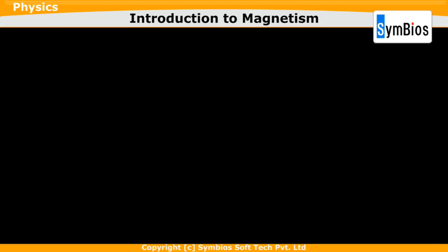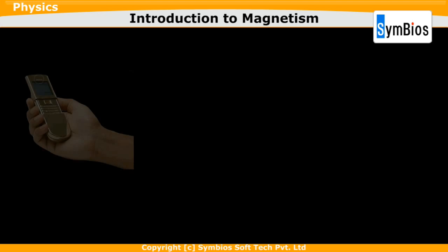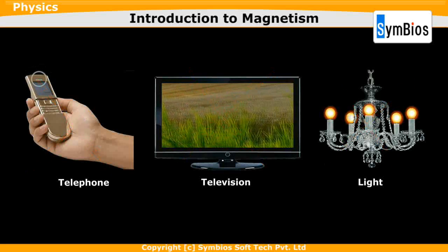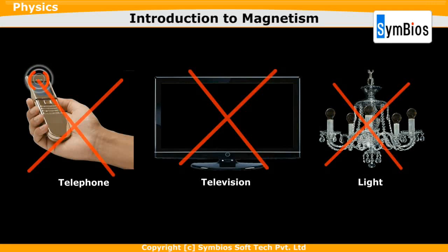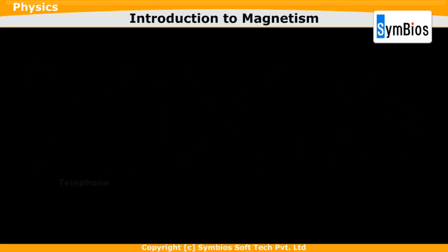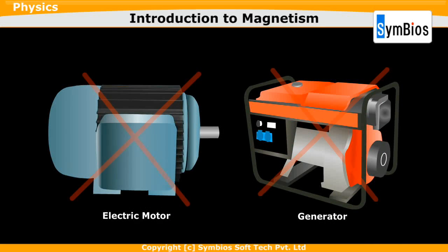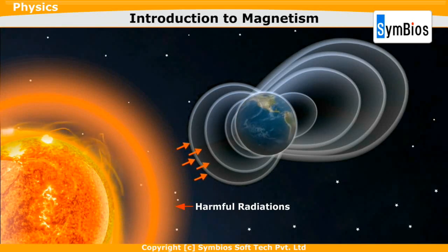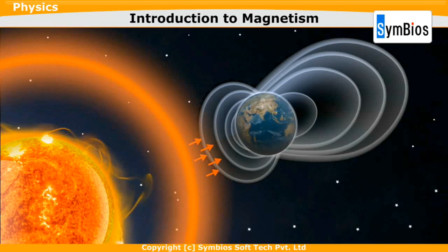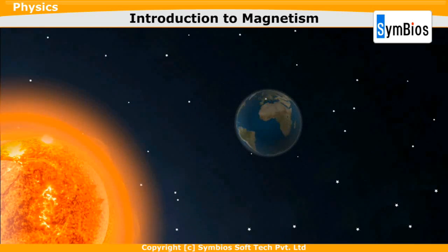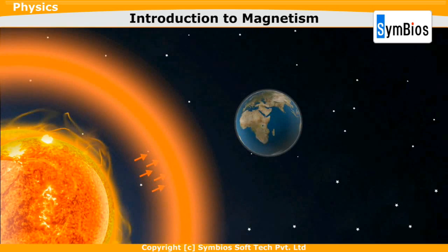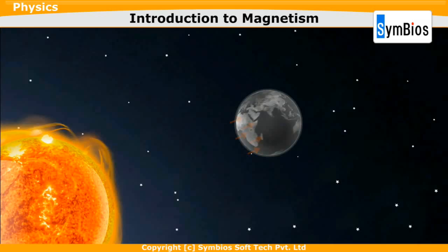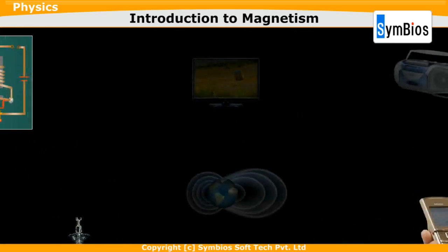Try to imagine a world without magnetism. There would be no telephones, televisions, fans or lights. None of these can work if there is no electricity, and without magnets we have no electric motors or electric generators. It is the magnetic field that prevents harmful radiations from reaching the earth's surface. If the earth had no magnetic field around it, all radiations would enter the earth's atmosphere and earth would no longer be able to support life.